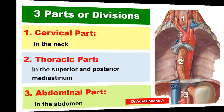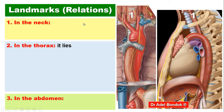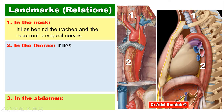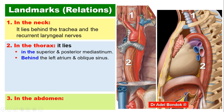Regarding the important relations: in the neck, the esophagus lies behind the trachea, and the recurrent laryngeal nerves separate the esophagus from the trachea. In the thorax, it lies in the superior mediastinum and the posterior mediastinum. In the superior mediastinum it lies behind the trachea; in the posterior mediastinum it lies behind the left atrium and the oblique sinus.